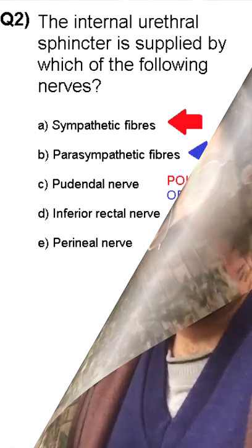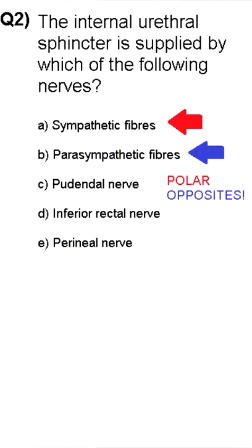Always look for polar opposites in a question. An example being: what is the supply of the pyloric sphincter? You'll have the options — parasympathetic, sympathetic.